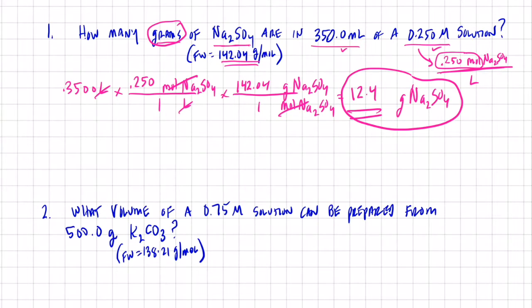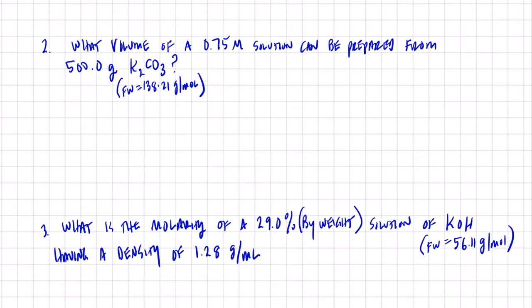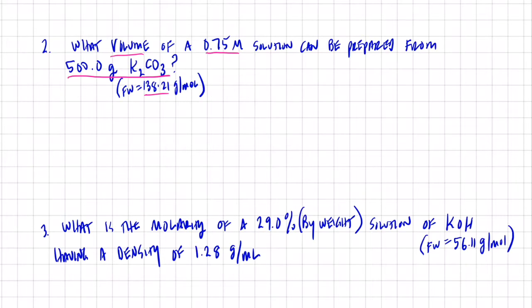Why don't you try example two without my help? I'm wanting the volume — in liters or milliliters — of a 0.75 molar solution that can be prepared from 500 grams of potassium carbonate. I'll give you the molecular weight. Take a minute, try that without my help, then come back to the video and see how you did.